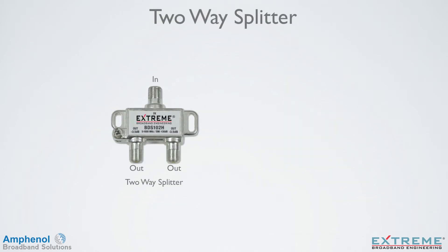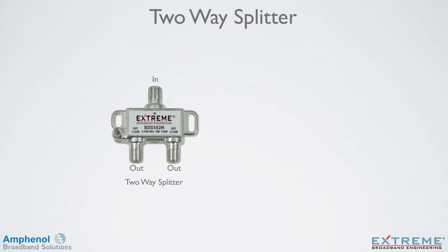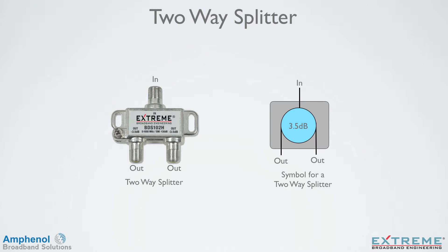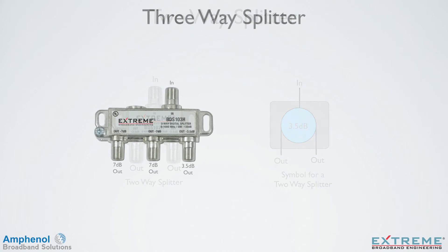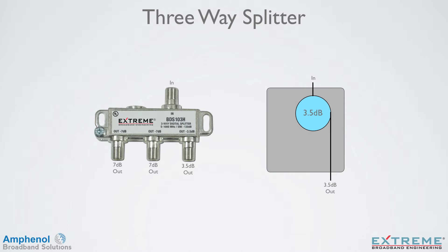The two-way splitter is one of the basic building blocks for all other splitting devices. On the left, we're showing a two-way splitter. On the right, we're showing the symbol equivalent of a two-way splitter, indicating the input, 3.5 dB of loss, and two outputs. Using this symbol, let's build some other splitting devices. On the left is an unbalanced three-way splitter, with one leg losing 3.5 dB and the other two losing 7 dB. The 3.5 dB leg feeds directly from one leg of a two-way splitter. Adding one more two-way splitter to the other output port of the first gives 7 dB of loss. So a three-way splitter is made up of two two-way splitters.